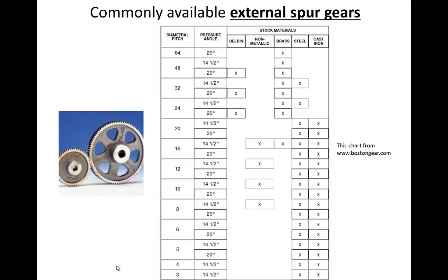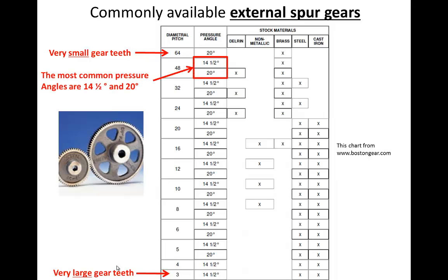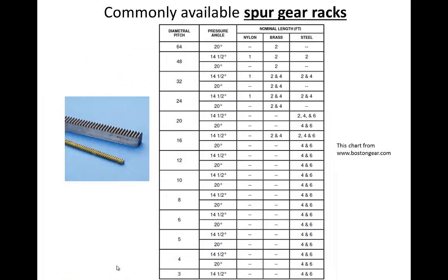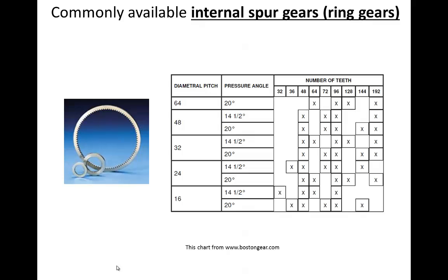I have put a catalog page from the Boston Gear Company in your brain book so that you can see that gears really are specified by diametral pitch — where a large diametral pitch means very small gear teeth and a small diametral pitch means very large gear teeth. You will also notice that gears really only come in two common pressure angle designs: 14.5 degrees and 20 degrees. Here is a catalog page for gear racks and internal ring gears, also specified by diametral pitch and pressure angle.